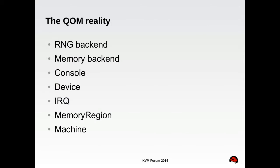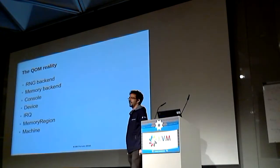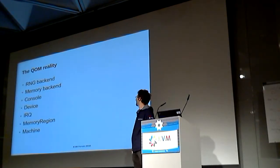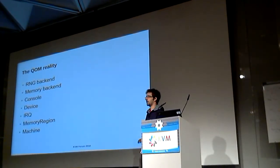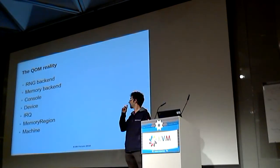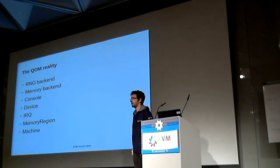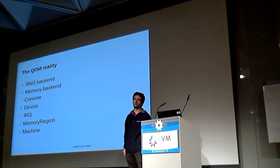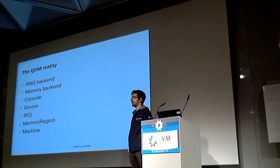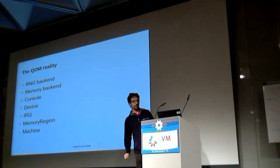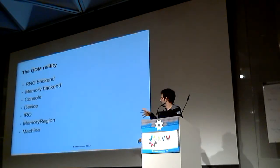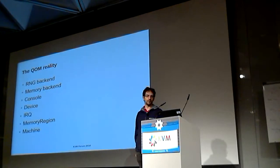Let's see how QM was actually used. We have a couple of backends implemented using QM: a random number generator and a memory hot plug backend. Console information is exposed using QM. There was a talk on Tuesday by Gerd about the graphics subsystems. Devices were the first thing to use QM — it was converted from the older QDev system. And more recently, device interrupts and device memory regions are also QM. And last but not least, the machine options and the machine object are also set as properties of a QM object.